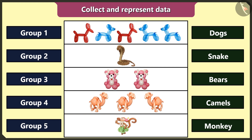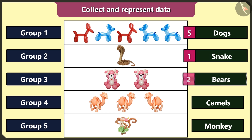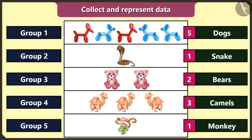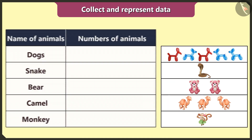Now I will count the animals in each group. There are five dog-shaped balloons in the first group, one snake-shaped balloon in the second group, two bear-shaped balloons in the third group, three camel-shaped balloons in the fourth group, and one monkey-shaped balloon in the fifth group.